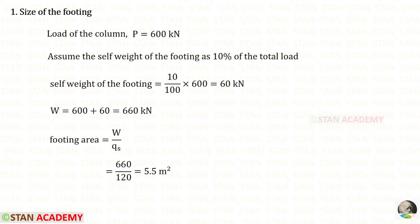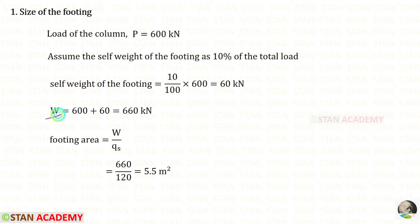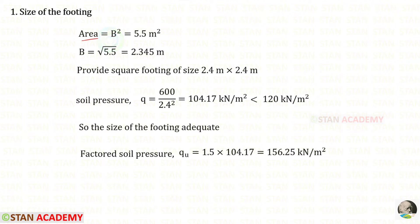The first step in the design is to find the size of the footing. We assume the self-weight of the footing is 10% of the total load, giving 60 kN. Adding this to the column load of 600 kN, we get W = 660 kN. Using the formula, the required footing area = 660/120 = 5.5 m². Since it is a square footing, area = B², so B = √5.5 = 2.345 m. We round this up to 2.4 m. We will provide a square footing of size 2.4 m × 2.4 m.